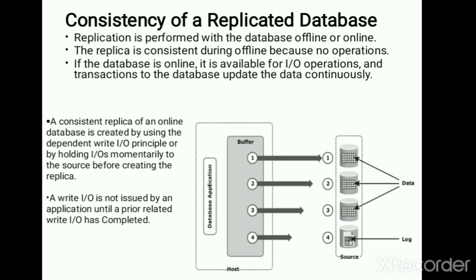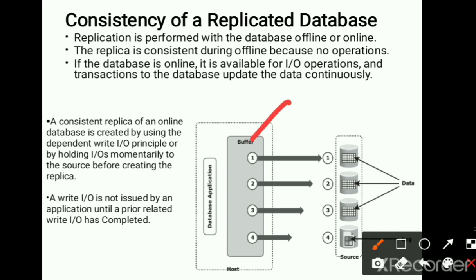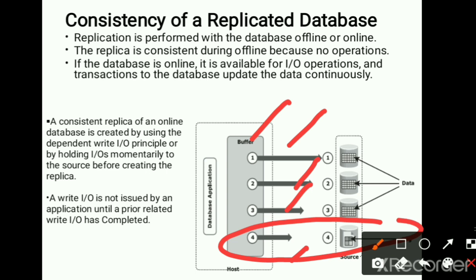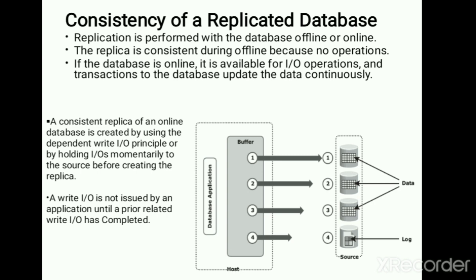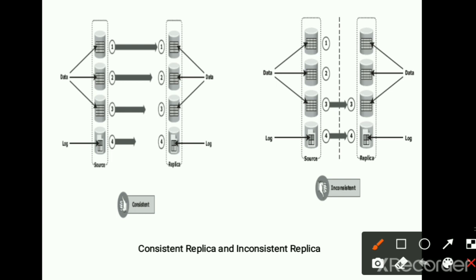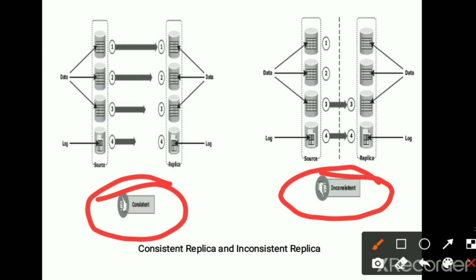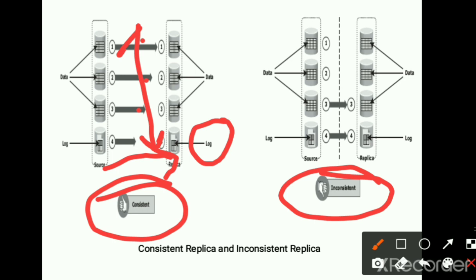In this diagram, we have a database application with a buffer in which transactions one, two, three, and four are taking place — the fourth being the log operation. This log operation tracks all operations done in transactions one through four, and all must be performed continuously. For consistent data, the replica must be created after all transactions are complete and written into the log file. All operations must be done, and if they are interrelated, those must all be completed.